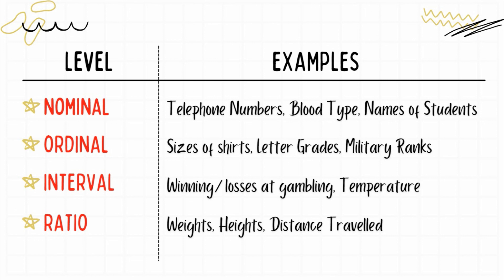For interval, examples are winning or losing at gambling and temperature. In this level, zero still has a value. For temperature, when we say zero, there is still a temperature — it's just zero degrees, which is cold. If it goes below zero, like negative one, negative two, negative three, it gets colder and colder. So zero in interval is very important and still represents a value.